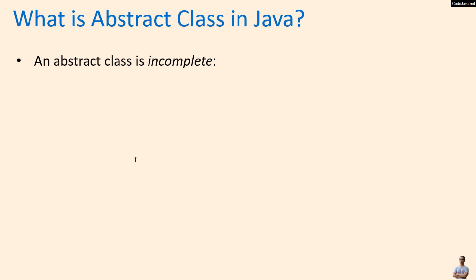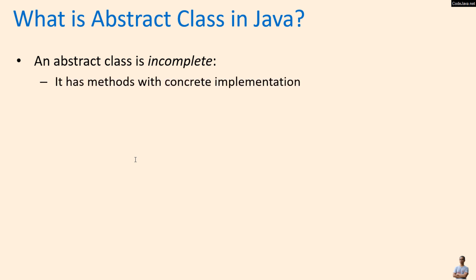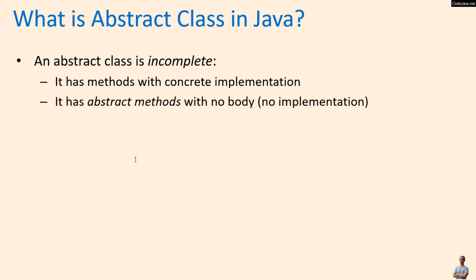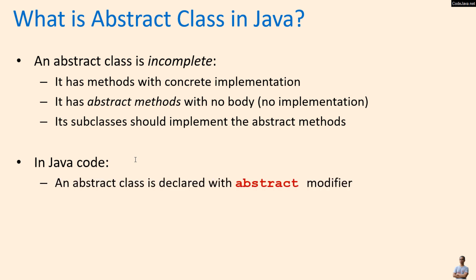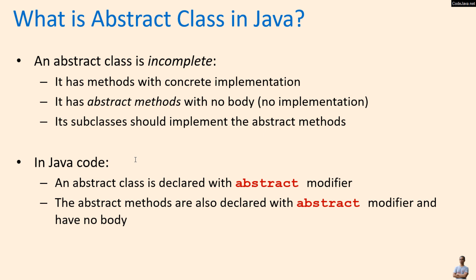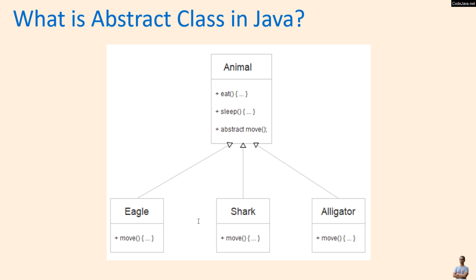Firstly, let's understand what is object class in Java. An object class is incomplete — that means it has methods with concrete implementation and it also has object methods with no body, no implementation, and its subclasses should implement those object methods. In Java code, an object class is declared with the object modifier, and the object methods are also declared with the object modifier and they have no body, no concrete implementation.